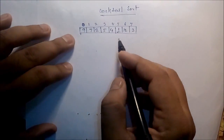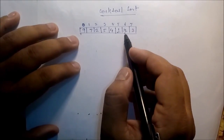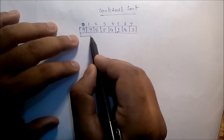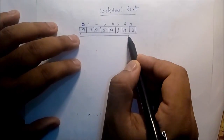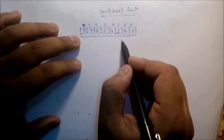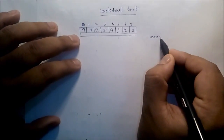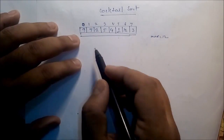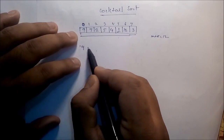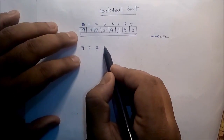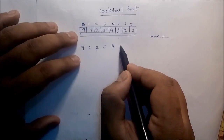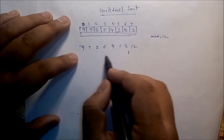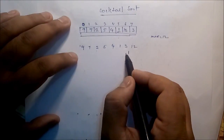Cocktail sort is a refinement of bubble sort. You process the whole area and identify the maximum value. The maximum value is 12. Keep the maximum value on the right side — so the order becomes: nine, seven, two, five, four, one, three, twelve.